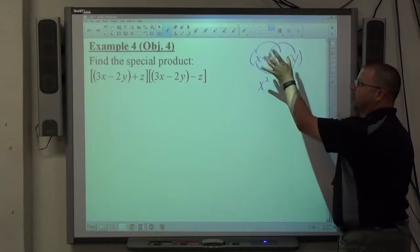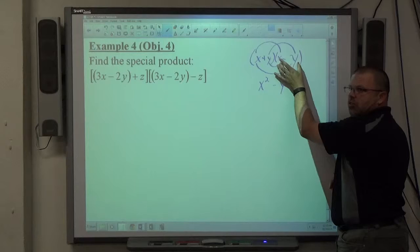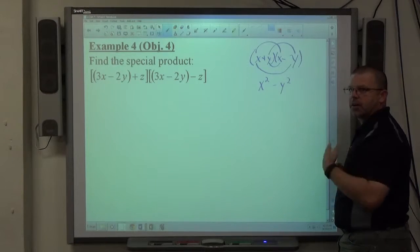So, shortcut: if you see objects added, exact same object subtracted, square first, square second, done.